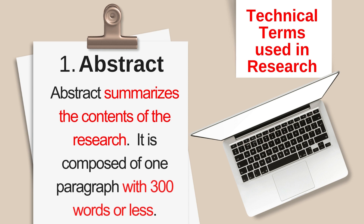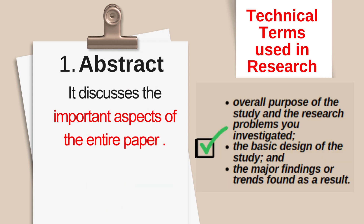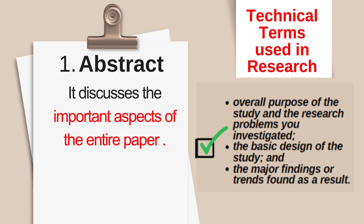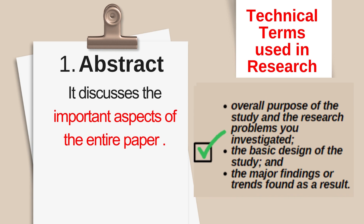Let us start with abstract. Abstract summarizes the contents of the research. It is composed of one paragraph with 300 words or less. The final abstract is written when you have completed the entirety of your research paper. It discusses the important aspects of the entire paper like the overall purpose of the study, the research problems investigated, the basic design of the study, and the major findings or trends found as a result.